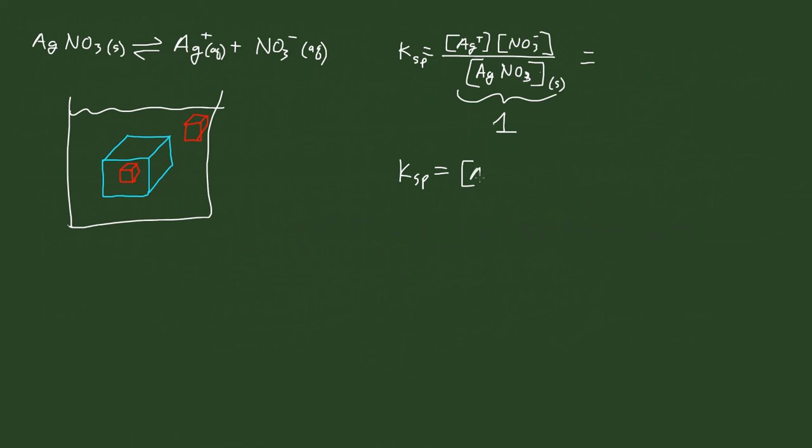So in this case, it's just going to be Ag+, silver ion, and NO3-, nitrate ion. So if I know the concentration of silver, and I know the concentration of nitrate ions in the solution, I multiply them together, and I can calculate the solubility product constant.